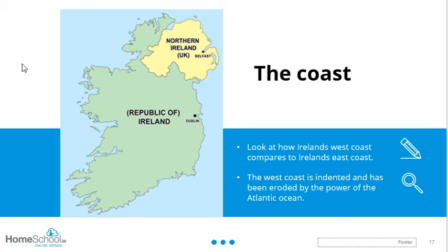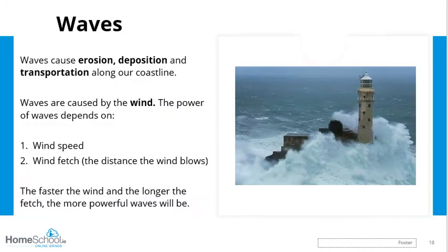These waves erode and deposit material. Erode means when a wave breaks down something — when it breaks bits off the coast or a cliff. Deposit means to drop something — things like sand, beaches, and shingle get dropped by the sea. Waves are the main force behind shaping our coastline, so our cliffs and beaches are all formed and caused by waves. Waves cause erosion, deposition, and transportation along our coastline.